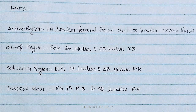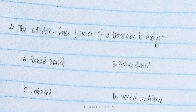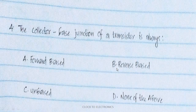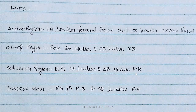In the active region of a transistor, the emitter-base junction is forward biased and the collector-base junction is reverse biased. In the cut-off region, both emitter-base and collector-base junctions are reverse biased. In the saturation region, both emitter-base and collector-base junctions are forward biased. In the inverse mode, the emitter-base is reverse biased.